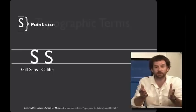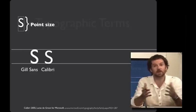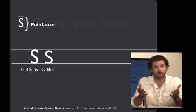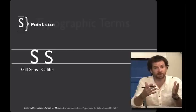For example, you can see for the same point size, here's a letter S in Gill Sans and a letter S in Calibri. And you can see that the Calibri S is lower than the Gill Sans S.